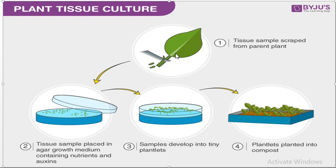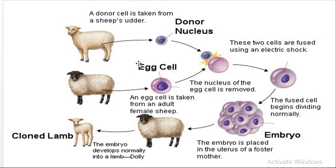This technique is also used for animal cells. Using a single cell to produce a whole organism by culturing methods — this is called cloning.